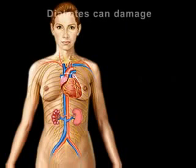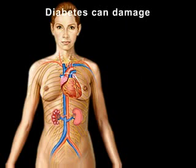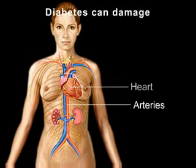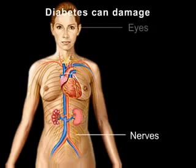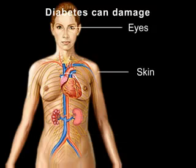Diabetes can eventually cause damage to the heart, arteries, kidneys, nerves, eyes, and skin.